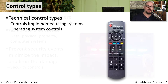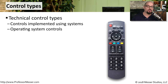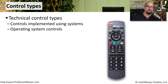There are three different control types that most security professionals will implement. The first is the technical control type, where we're using the systems and the software inside of our infrastructure to limit the impact or to prevent a security event.